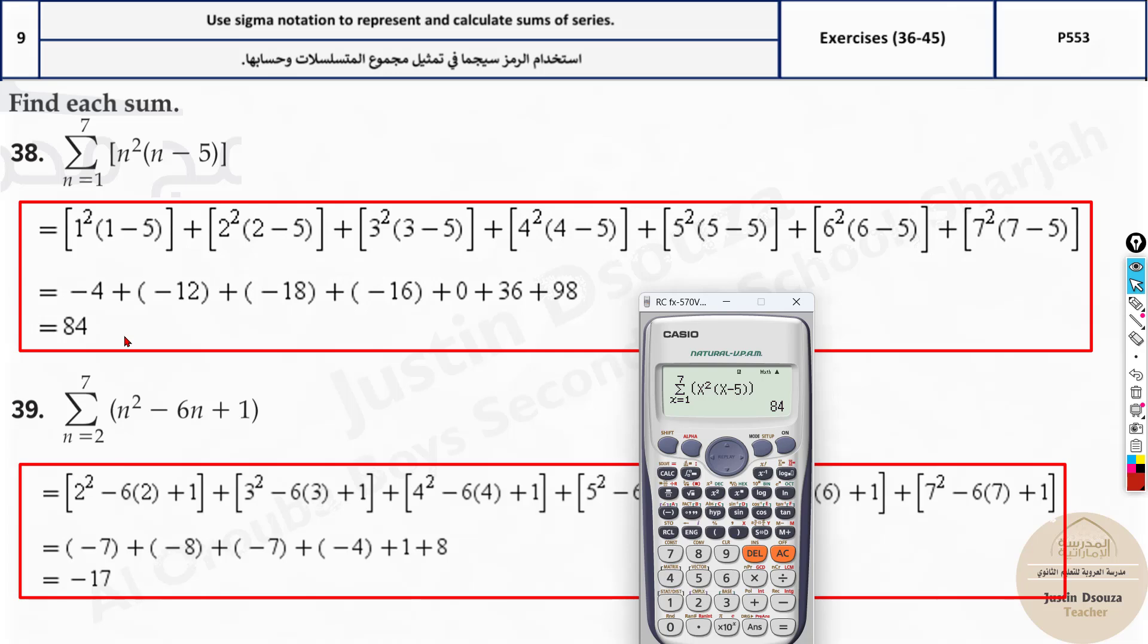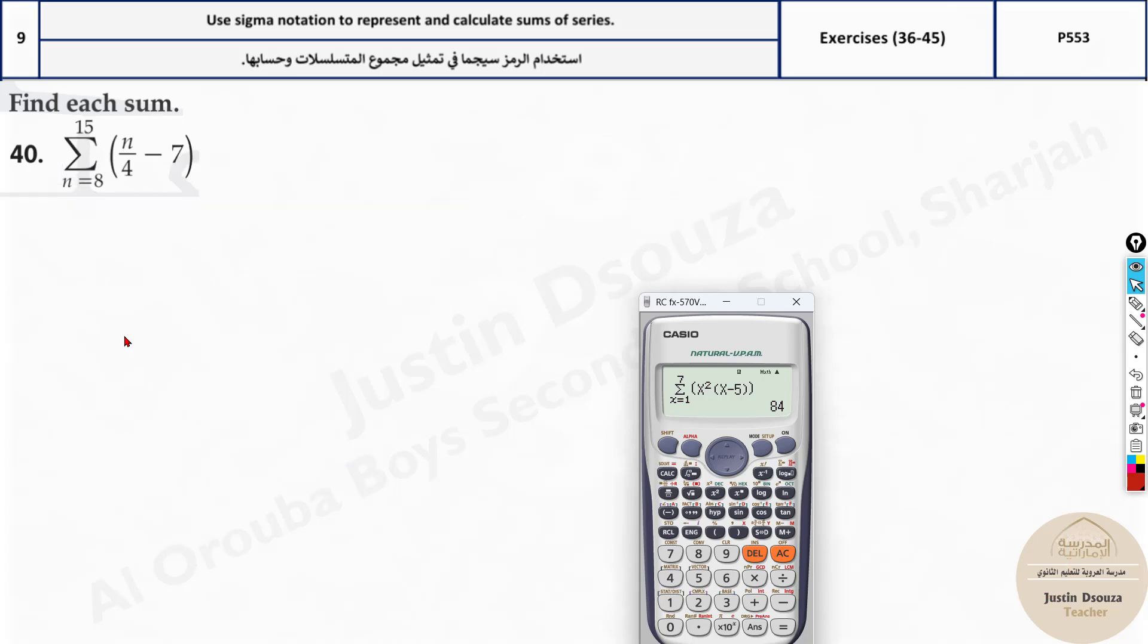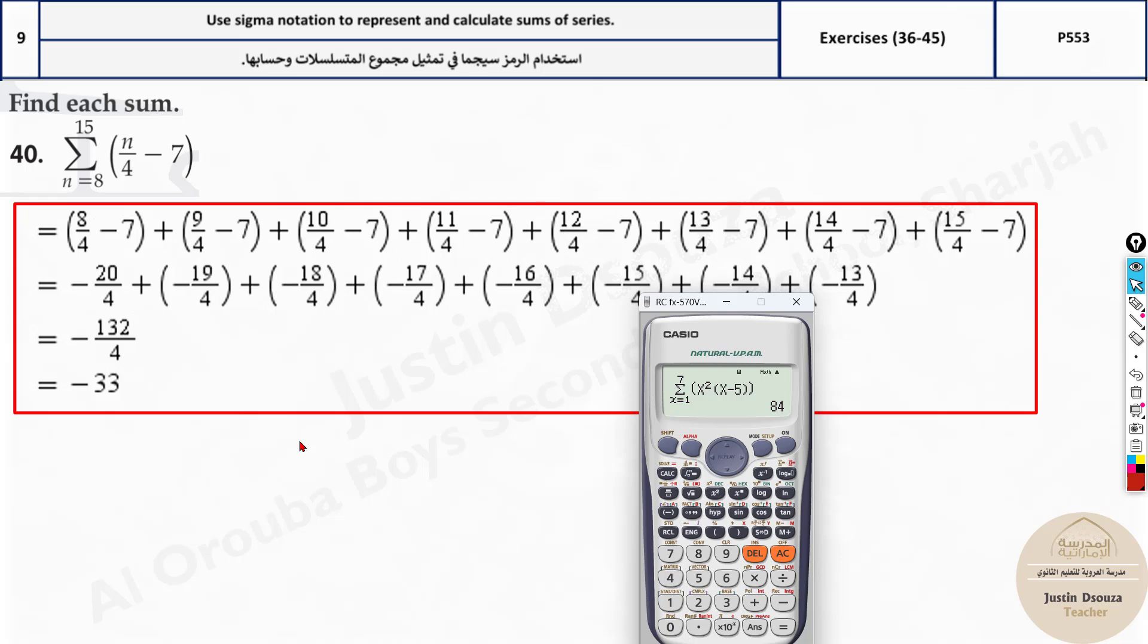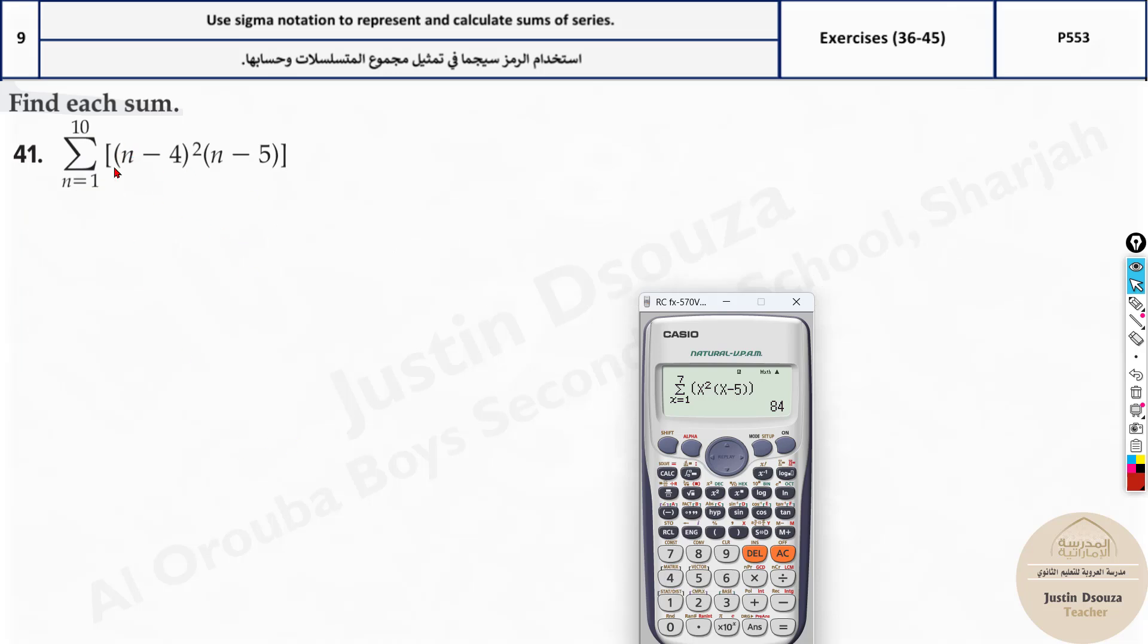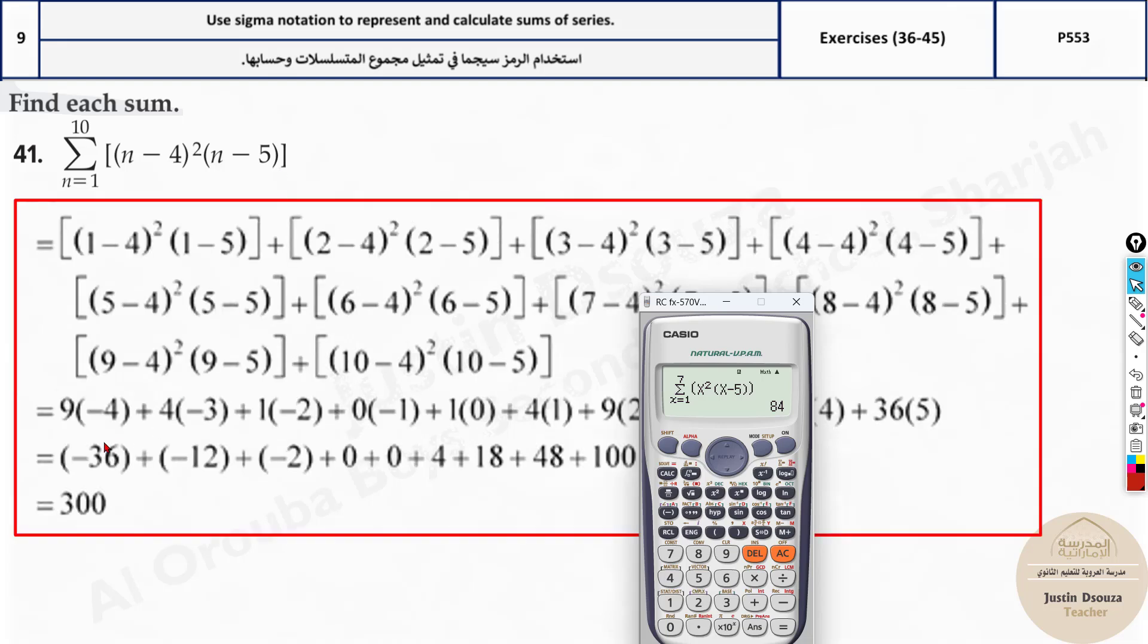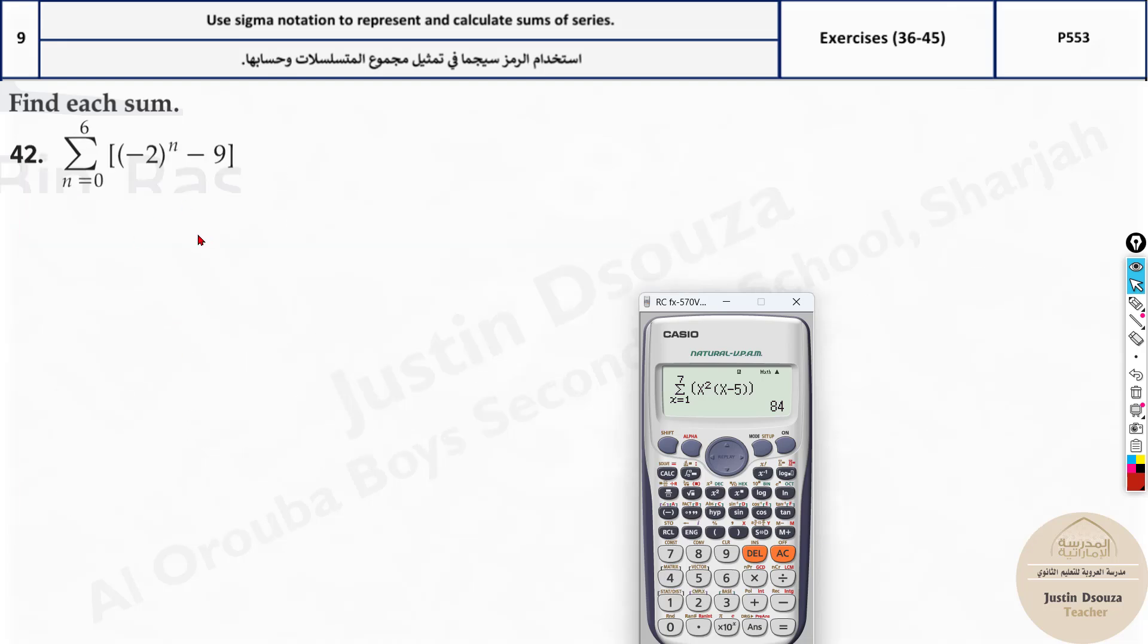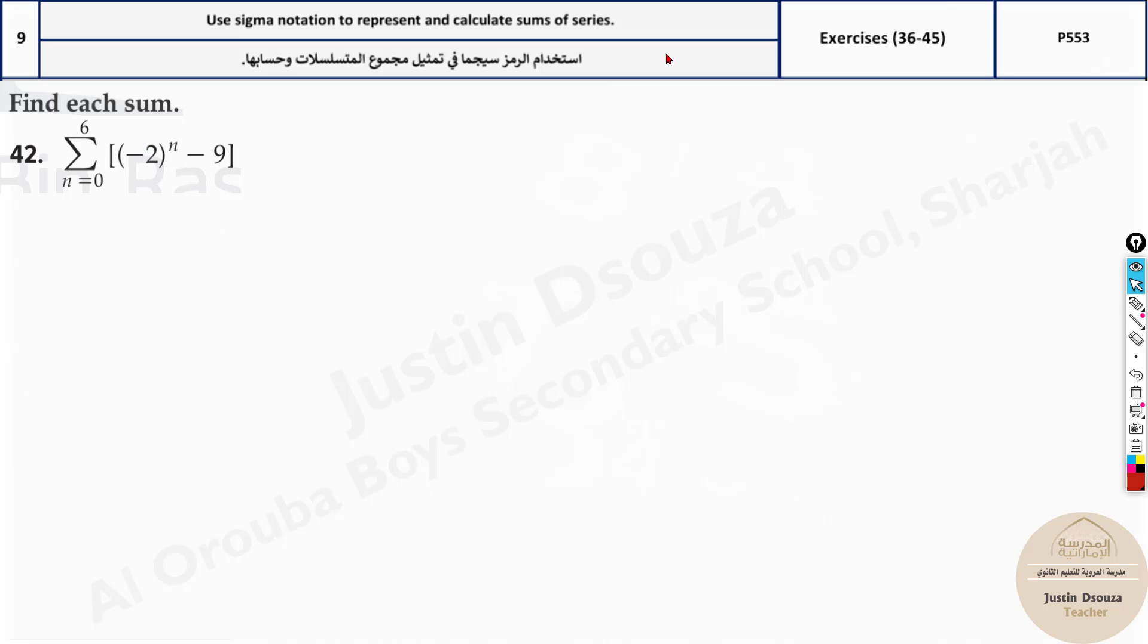All the problems are similar. This one is also straightforward, just use the calculator and you'll get the answer. Even over here, just use proper brackets, square it up and then multiply this. Even over here there is nothing much, this is just the power alpha x.